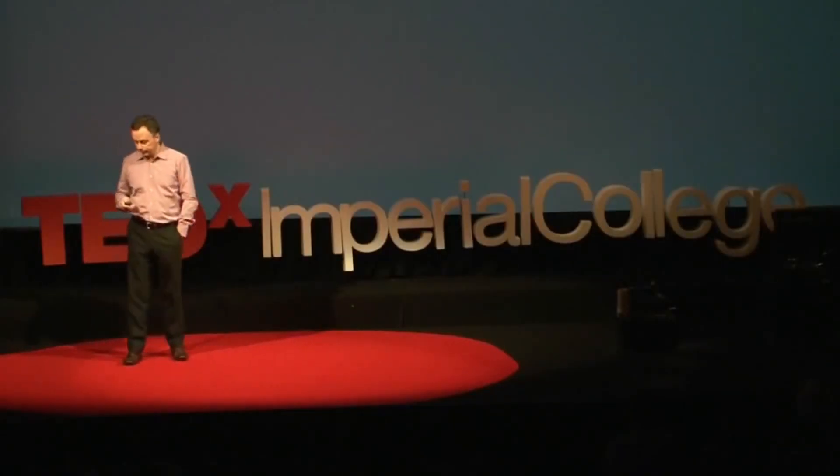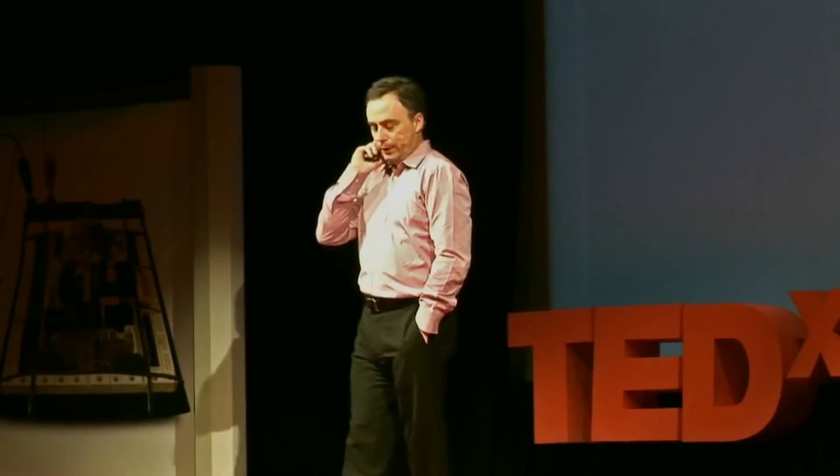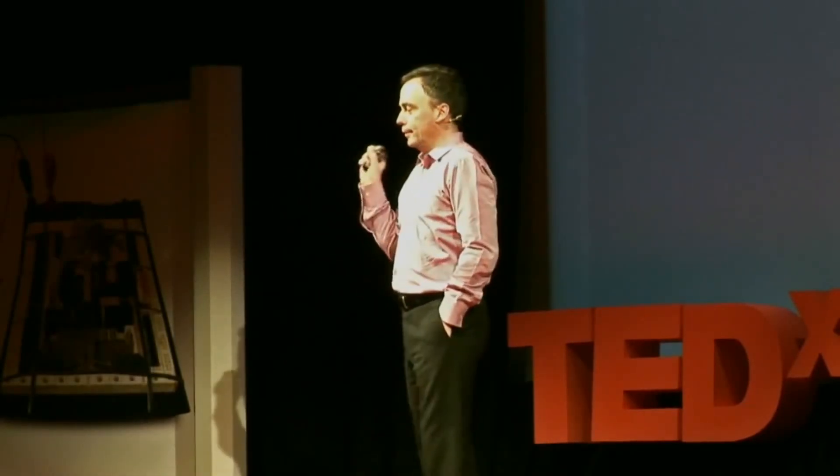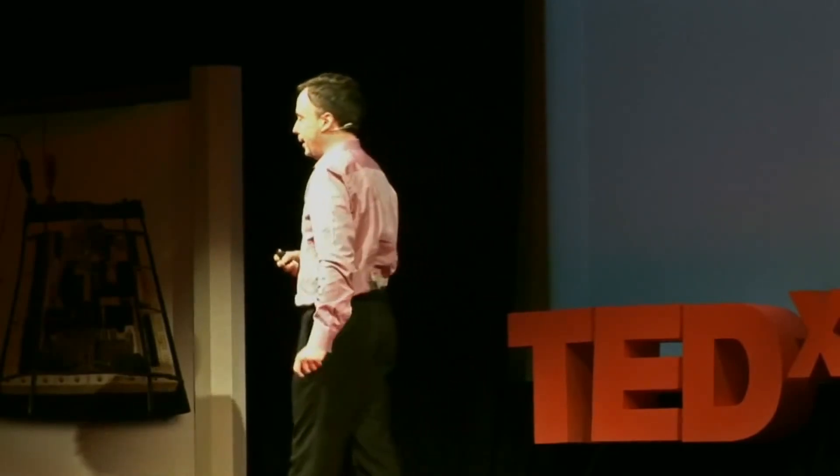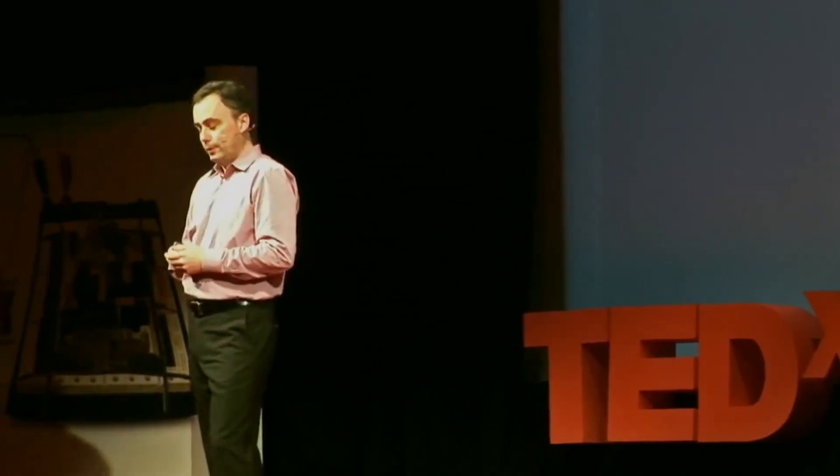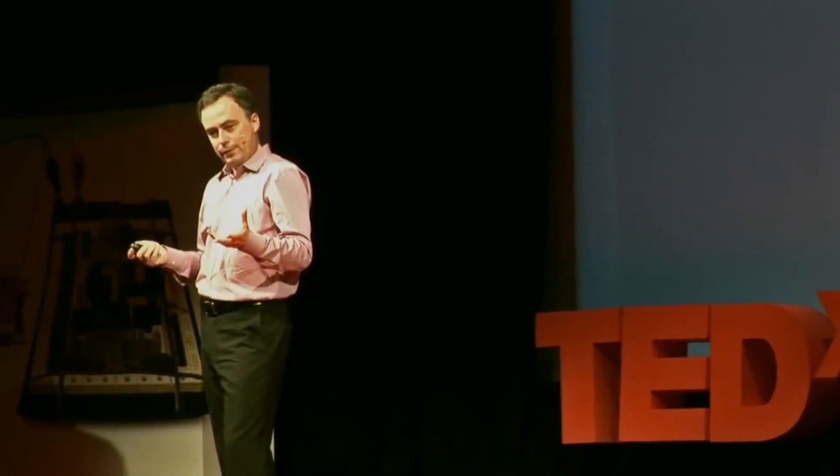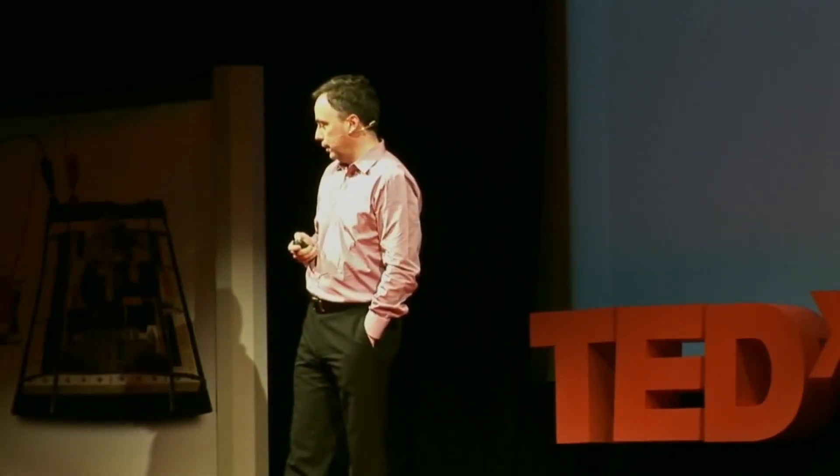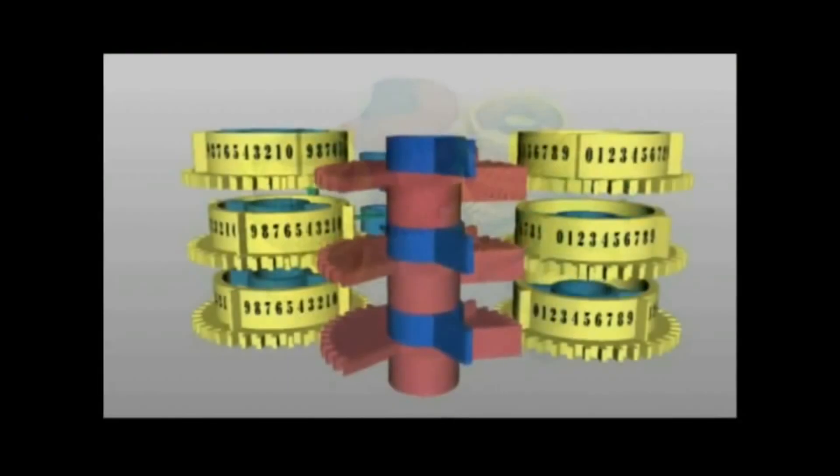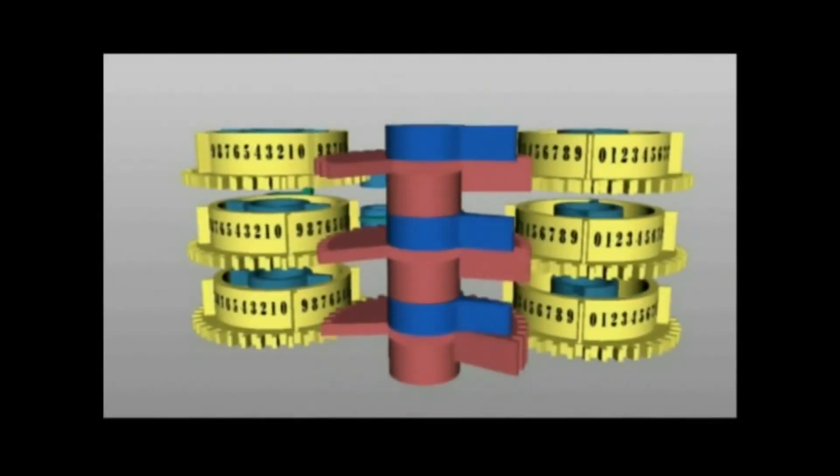But in between that, we're going to do a simulation. Babbage himself wrote that he said, as soon as the analytical engine exists, it will surely guide the future course of science. Of course, he never built it because he was always fiddling with new plans. But when it did get built, of course, in the 1940s, everything changed. And I'll just give you a little taste of what it looks like in motion with a video which shows just one part of the CPU mechanism working.